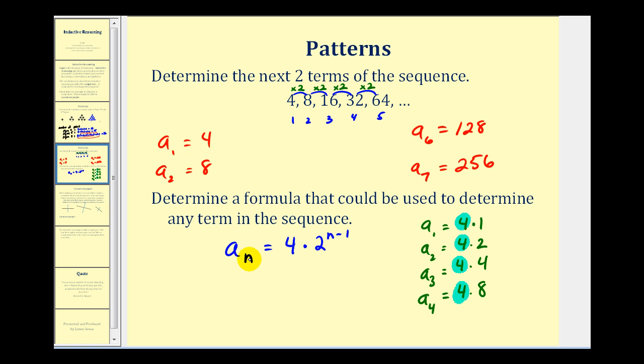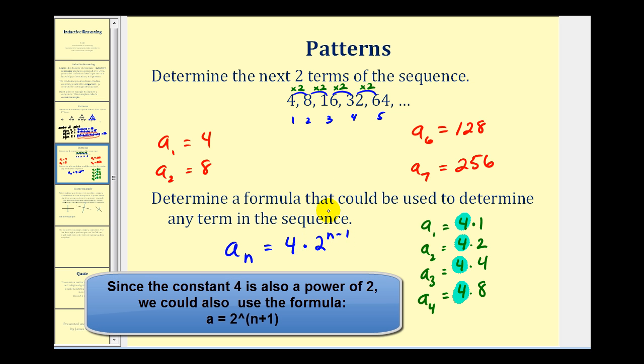A sub two, now that n is two, we'd have four times two to the first power, which would give us eight. When n is three, we'd have four times two to the three minus one, or two to the second. That would be four times four is sixteen, and so on. So here's one possible formula that we could use to generate any term in the sequence.